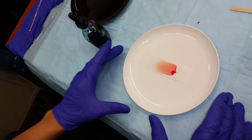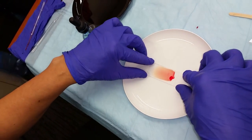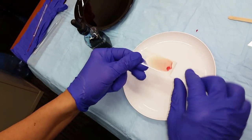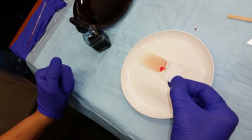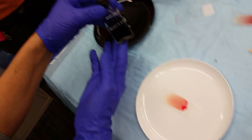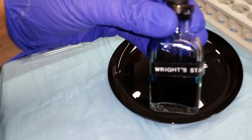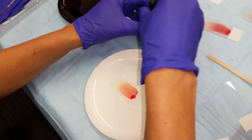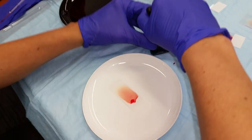To stain the peripheral blood smear, you are going to place the slides along a rack over the sinks in the lab room. You are then going to take Wright stain and completely flood the slide with the Wright stain.